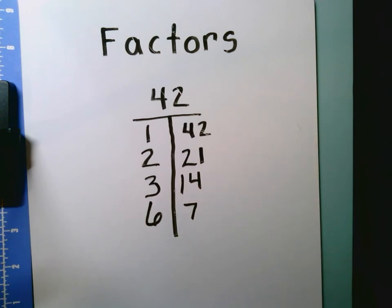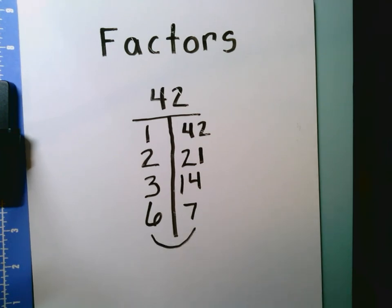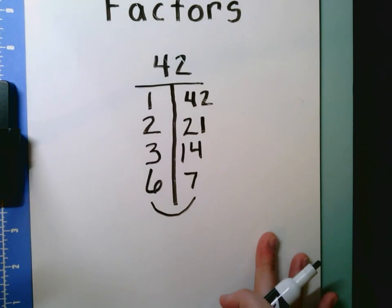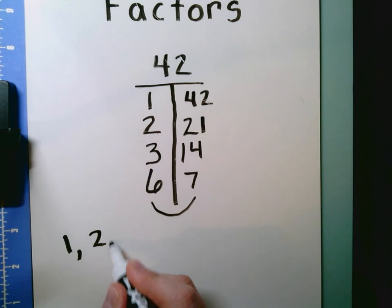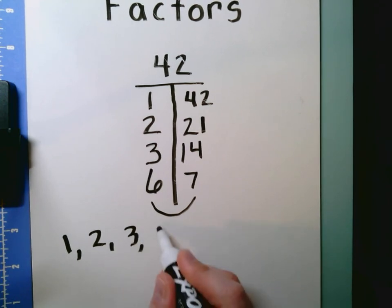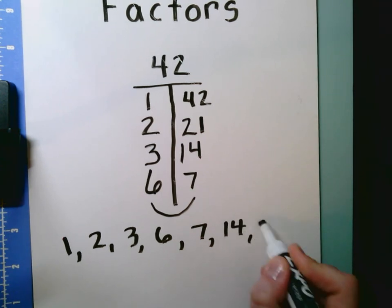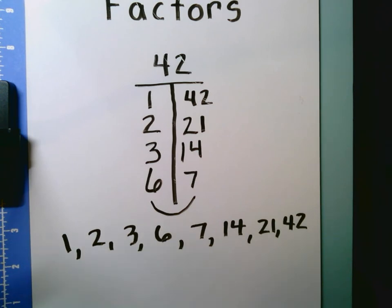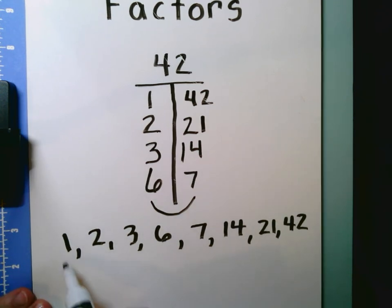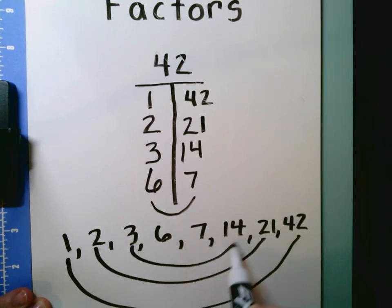The next number on our number line after 6 is 7, and 7 is already on our list, so we have found all the factors of 42. If I write them out in order from least to greatest, the factors are 1, 2, 3, 6, 7, 14, 21, and 42. I can check that I have them all by using my factor rainbow: 1 times 42, 2 times 21, 3 times 14, and 6 times 7.